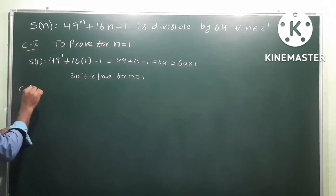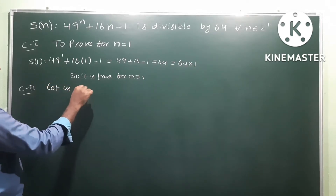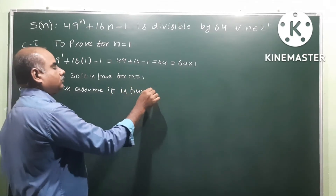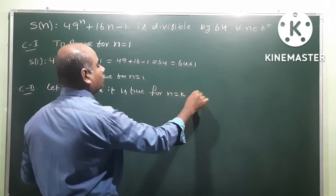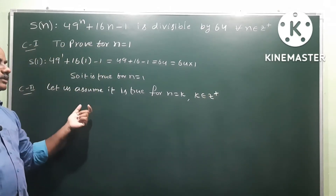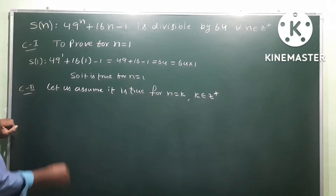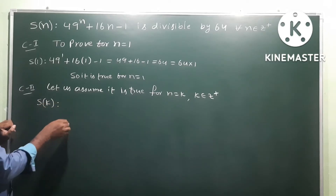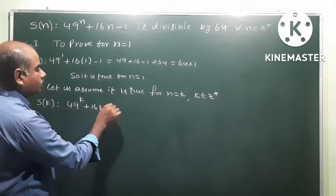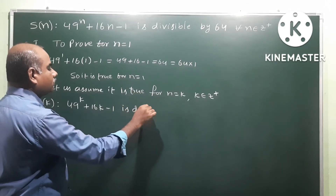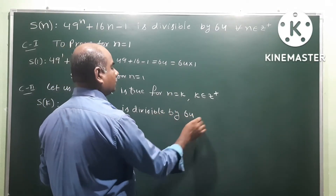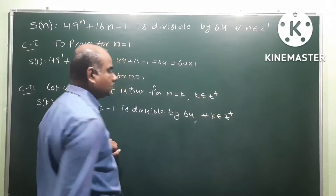Case 2: Assume the statement is true for n = k, where k belongs to Z+. When n = k, our statement becomes: 49^k + 16k - 1 is divisible by 64 for all k belonging to Z+. This is our inductive hypothesis.